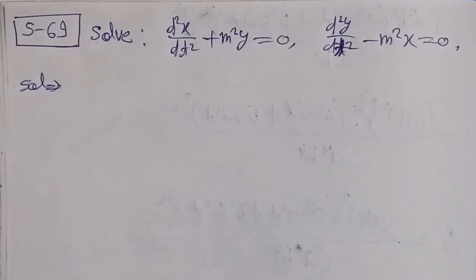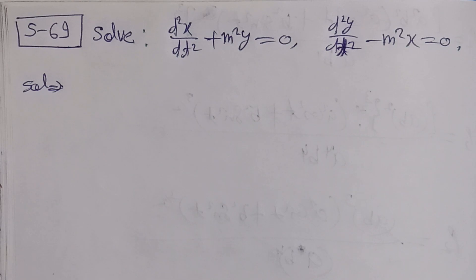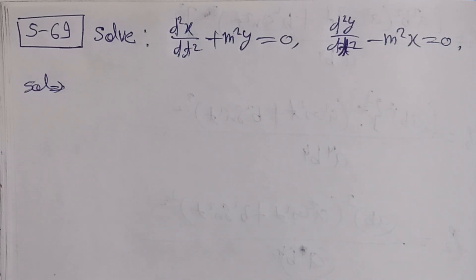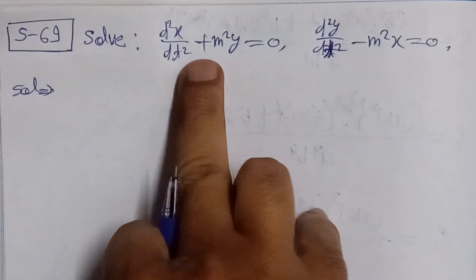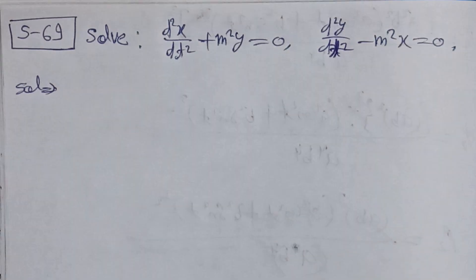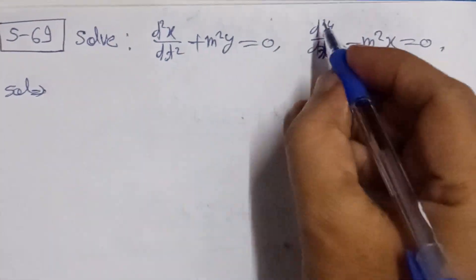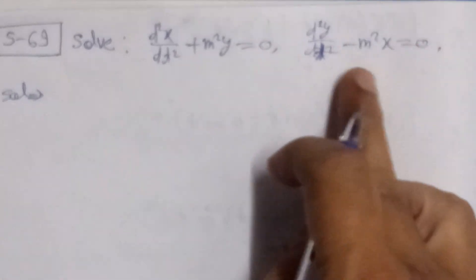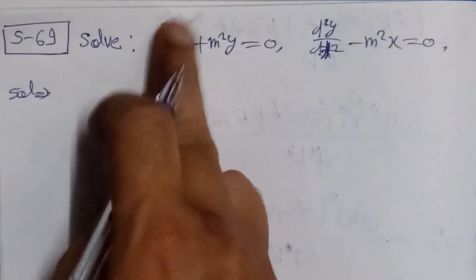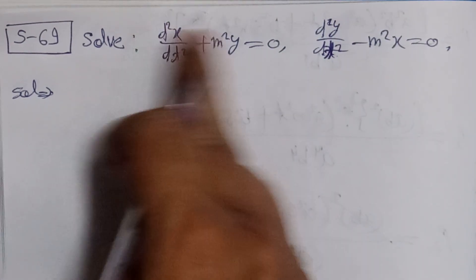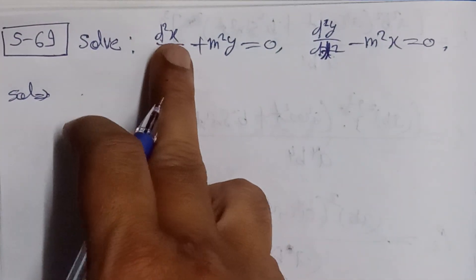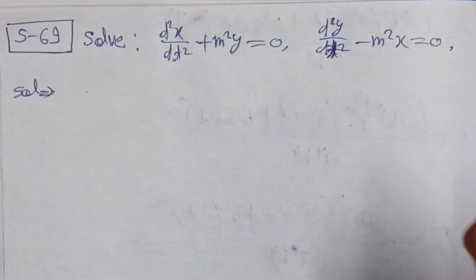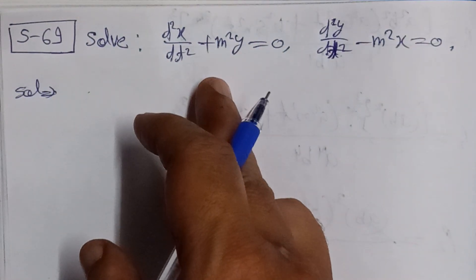Bismillahirrahmanirrahim. This problem is from the chapter on simultaneous linear differential equations. We need to solve: d²x/dt² + m²y = 0 and d²y/dt² − m²x = 0. Here the dependent variables are x and y, and the independent variable is t.